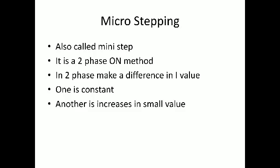Micro step is achieved by changing the magnitudes in two-phase on mode. Either one phase magnitude is decreased while the other is maintained, or both are changed in sequence. Based on this, micro steps are achieved for the stepper motor. That's all for the variable reluctance stepper motor.